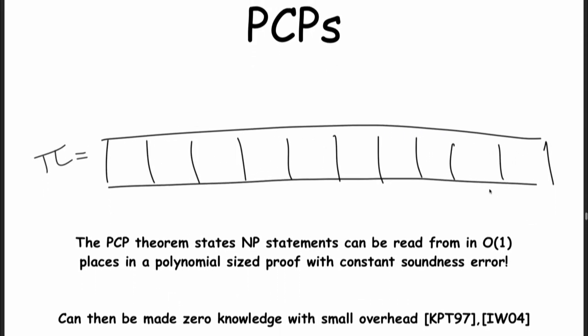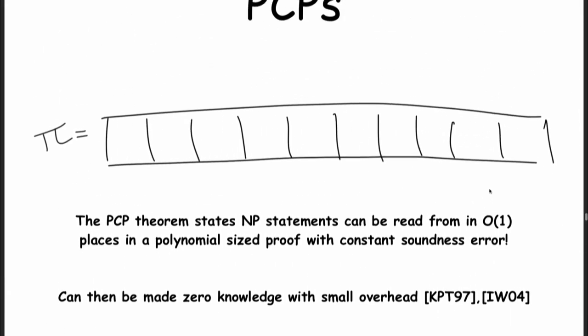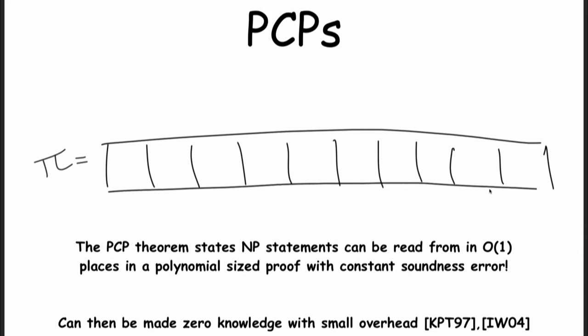PCPs: PCP means probabilistically checkable proof. The PCP theorem says — and this is mind-blowing — that any NP statement, meaning any statement that we can verify efficiently in the world we live in, can be read from in a constant number of places to produce a proof with constant soundness error. So you read from a proof of, say, a mathematical theorem in a constant number of places to make a constant-size proof which then has constant soundness error. And there's a great result that says this can be made zero-knowledge with small overhead, which means we can make constant-size zero-knowledge proofs for any statement. This is world-changing.